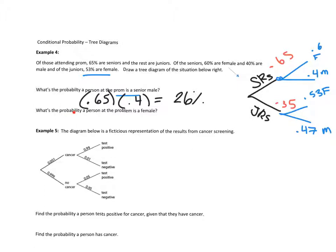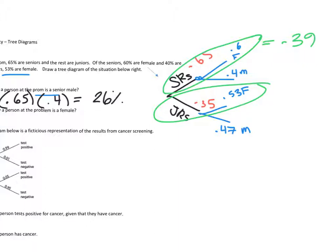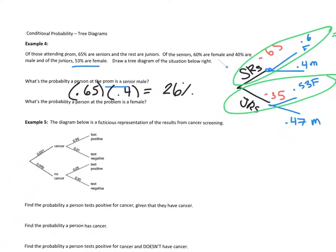Question two: what's the probability a person at prom is female? There are two situations — senior female or junior female. Multiply 0.65 × 0.6 to get 0.39, and 0.35 × 0.53 to get 0.1855. Adding those together gives about 57.55%, which rounds to about 58%.